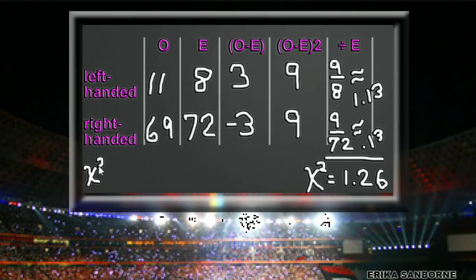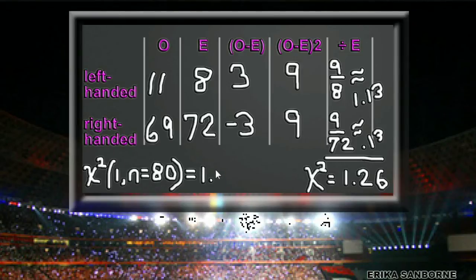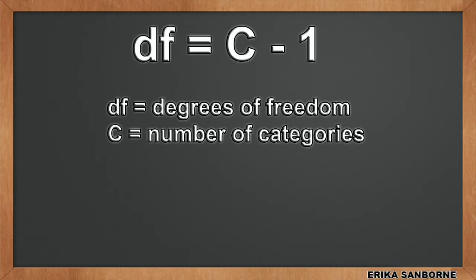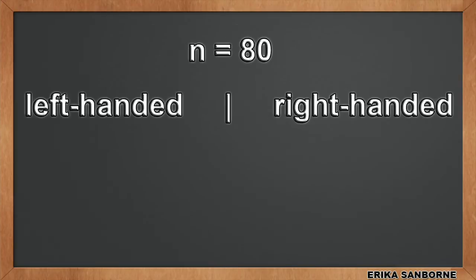You normally write the chi-square statistic with the degrees of freedom and sample size in parentheses, followed by a p-value and effect size if appropriate. I need the critical value from the chi-square table. To use the table, I just need my desired significance level, or alpha, and the degrees of freedom. Degrees of freedom for this test is the number of categories minus 1. There are two categories — left-handed and right-handed — so the degrees of freedom here is 1.